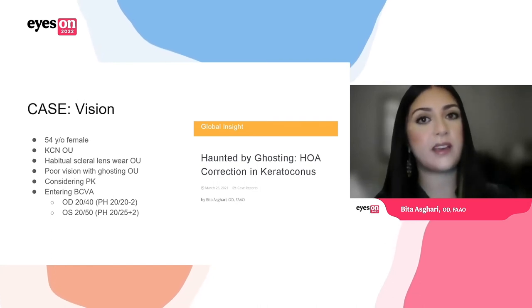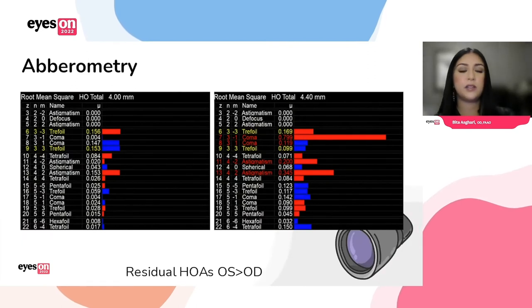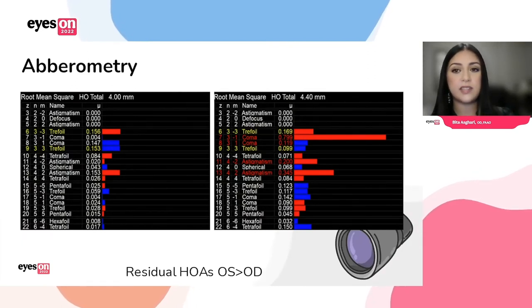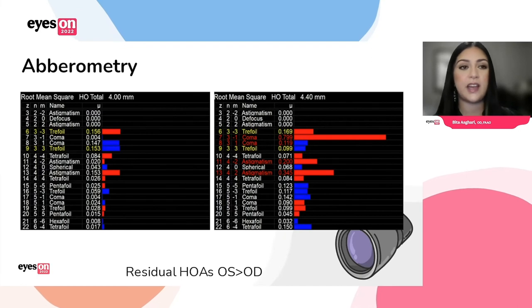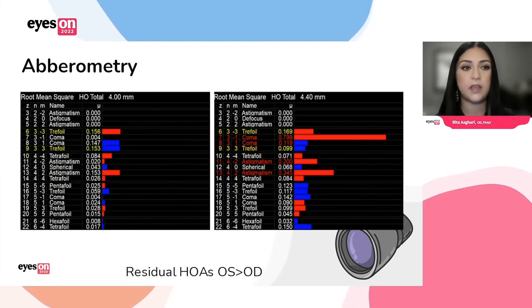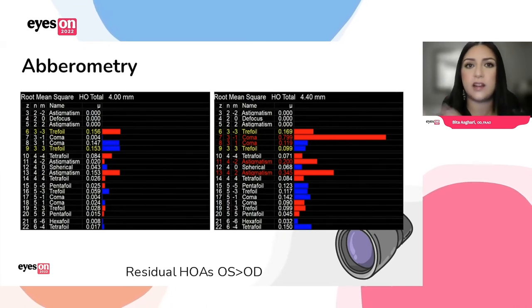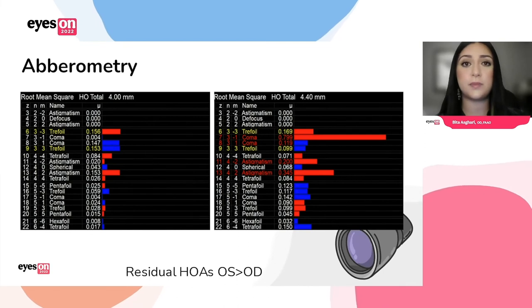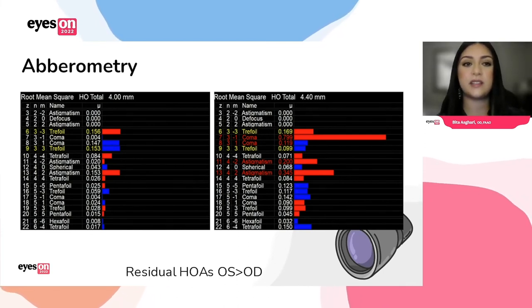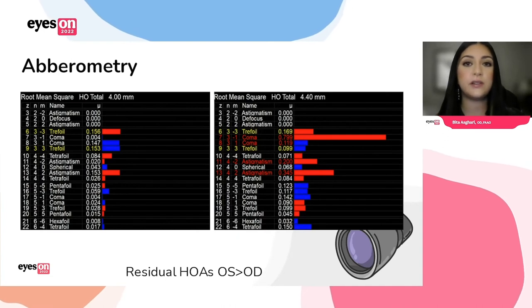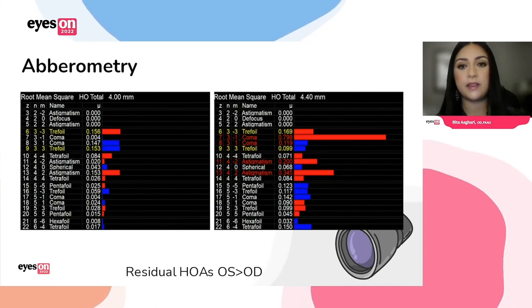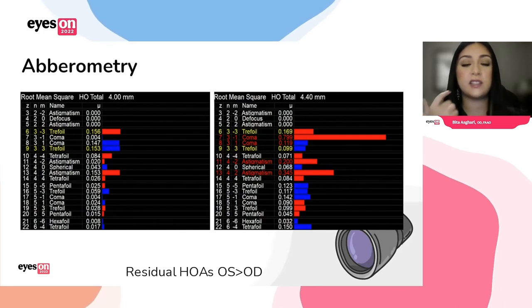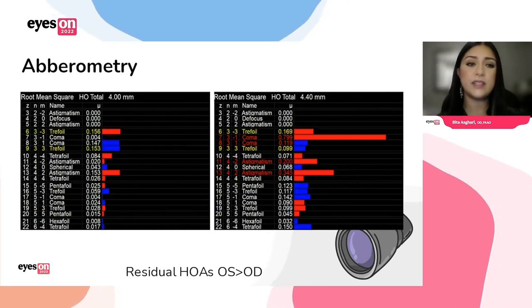With the aberrometer I suspected she was getting a lot of higher order aberrations, as many ectasia patients do. Looking at the aberrometry findings — you don't have to understand what these terms mean, all you have to understand is that the magnitude of the bar signifies the significance of the aberration. With the left eye the aberrations were far more pronounced than the right, reflecting the severity of her keratoconus at baseline. But despite the left being far worse, she was still very symptomatic in both eyes. The problem was she had a lot of residual aberrations and wasn't happy with her vision. Is there anything we can do to improve upon this to prevent surgery and prevent scleral lens failure?